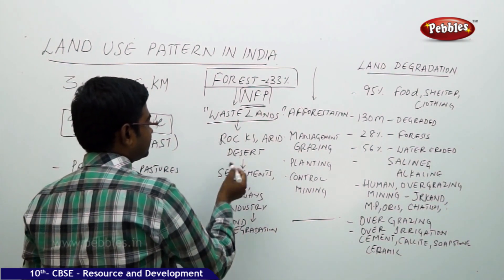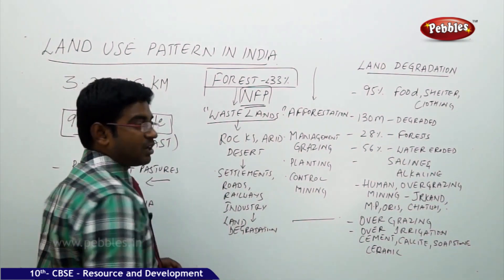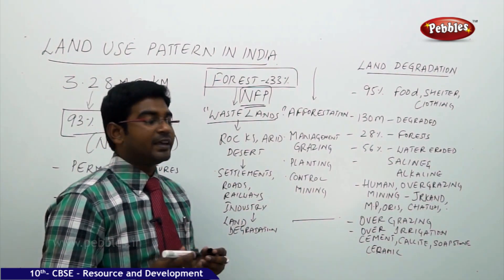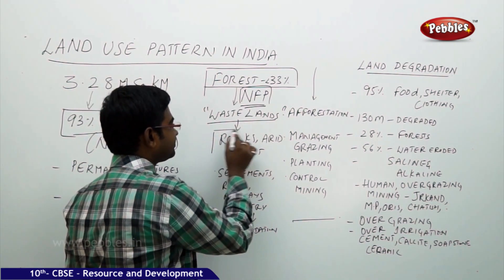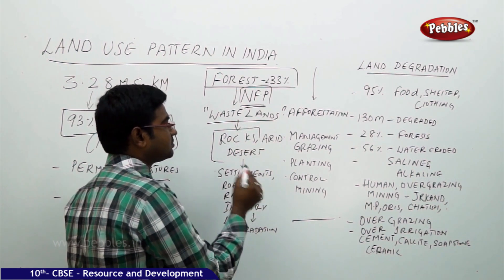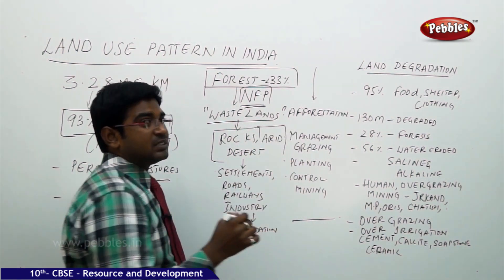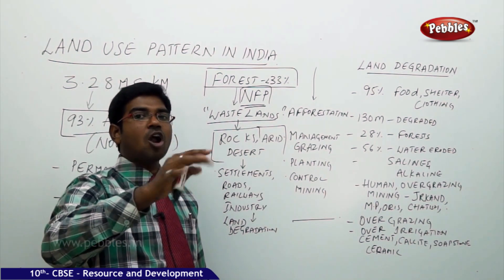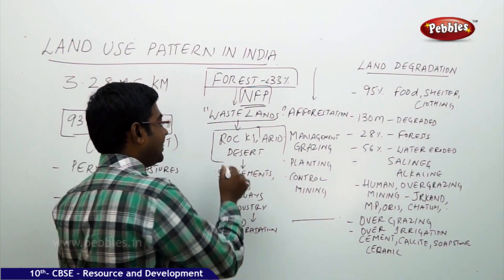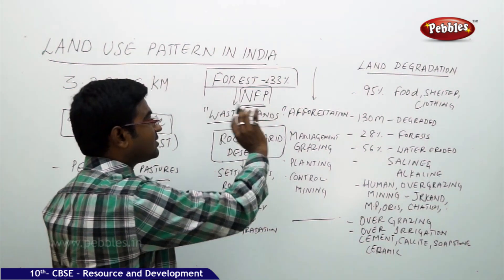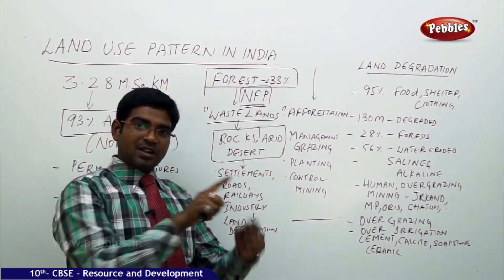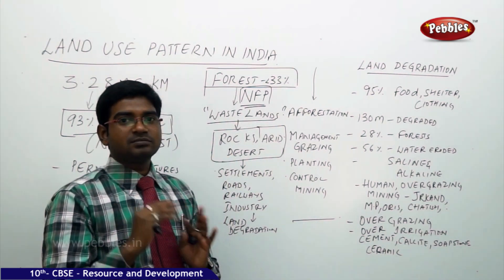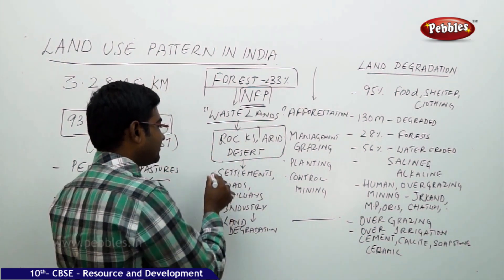Other categories of wasteland include rocky lands with huge rocks, arid and semi-dry conditions where rains don't come, hot climatic conditions, and desert lands. Forest clearing and these conditions are regular activities contributing to wasteland in India.